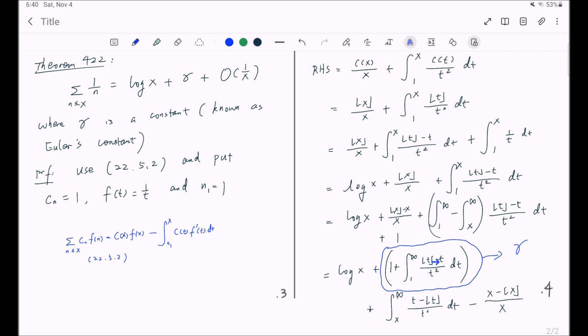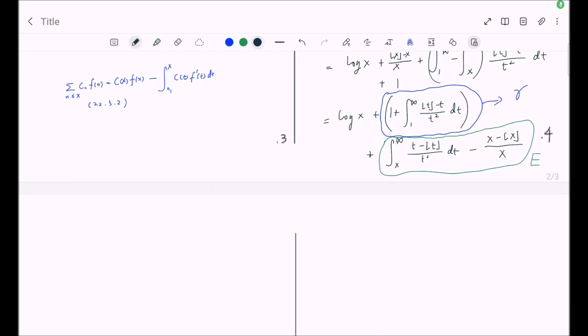This part, because this integral is convergent, is a constant. And that constant will be the Euler's constant, γ. Because this integral is negative, but at the same time, you can see its absolute value is also bounded by 1, by integrating from 1 to infinity of 1/t². This γ will turn out to be a constant between 0 and 1. But of course, you don't have to know what kind of value this is, because we only need to accept this as a constant.